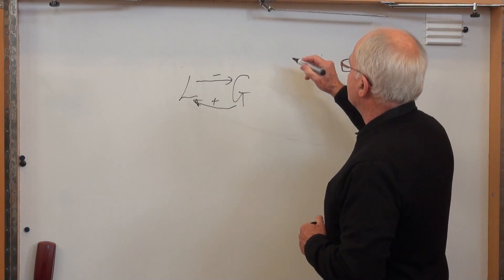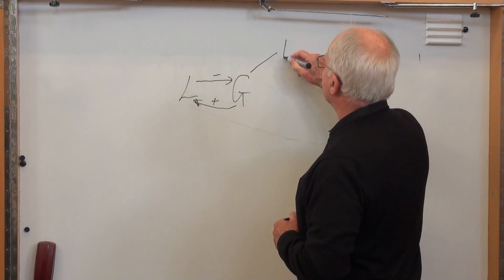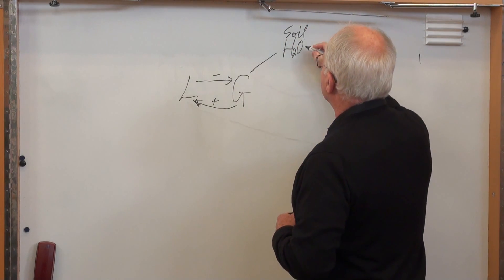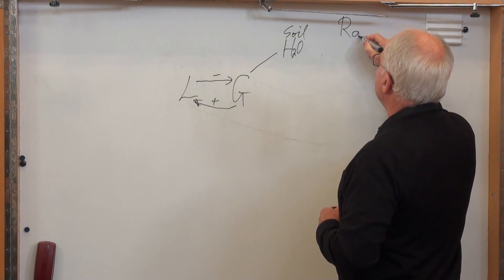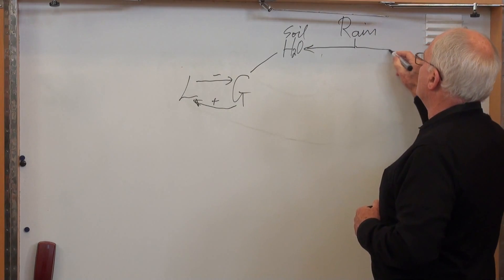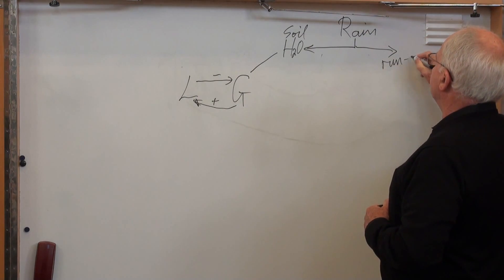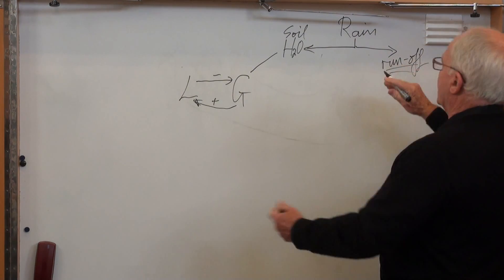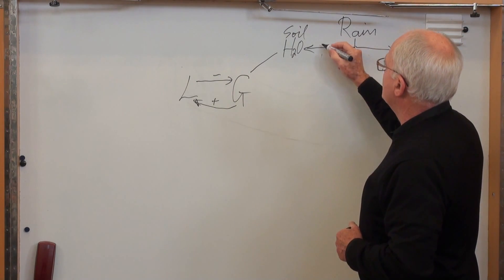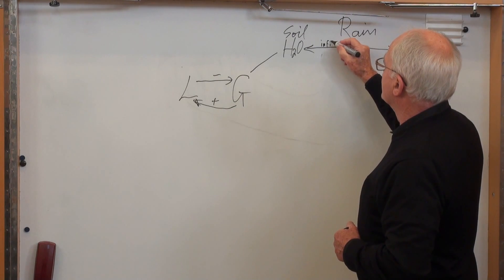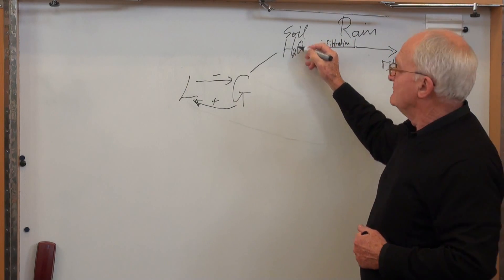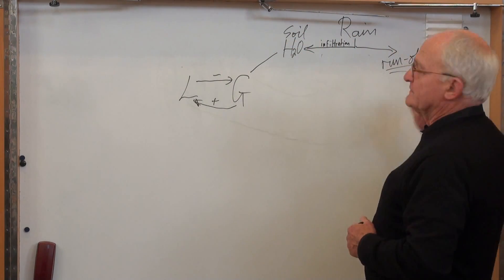The rest of the system is that grass is also affected by water in the soil, by soil water. Soil water is affected by rainfall. But the rainfall goes partly into soil water and partly into runoff, so it runs off out of the system. The difference is how much infiltration occurs. Of the rain, some of it infiltrates to become soil water and some runs off.